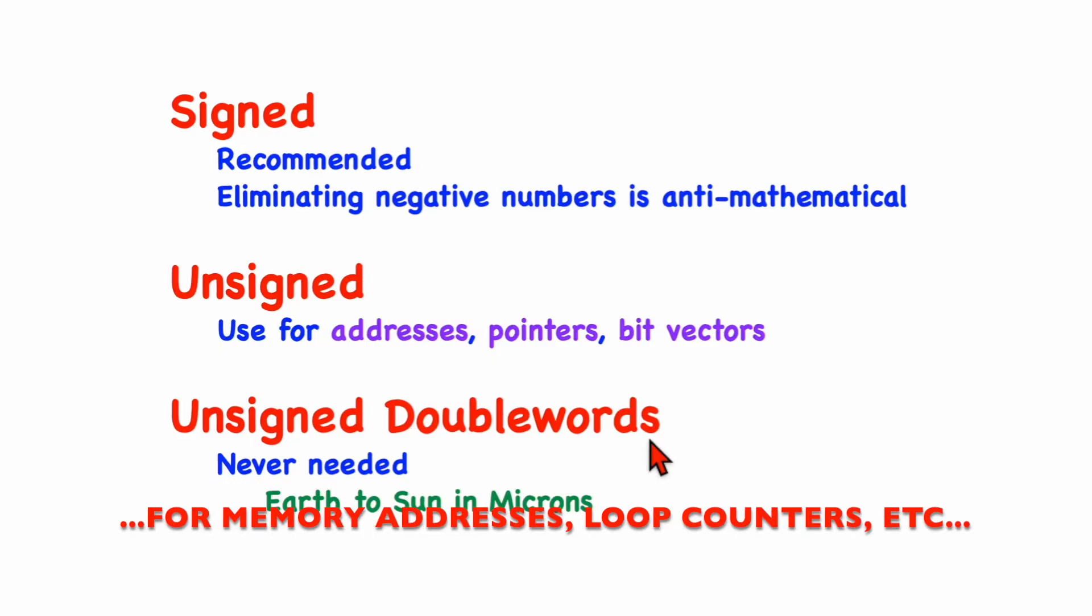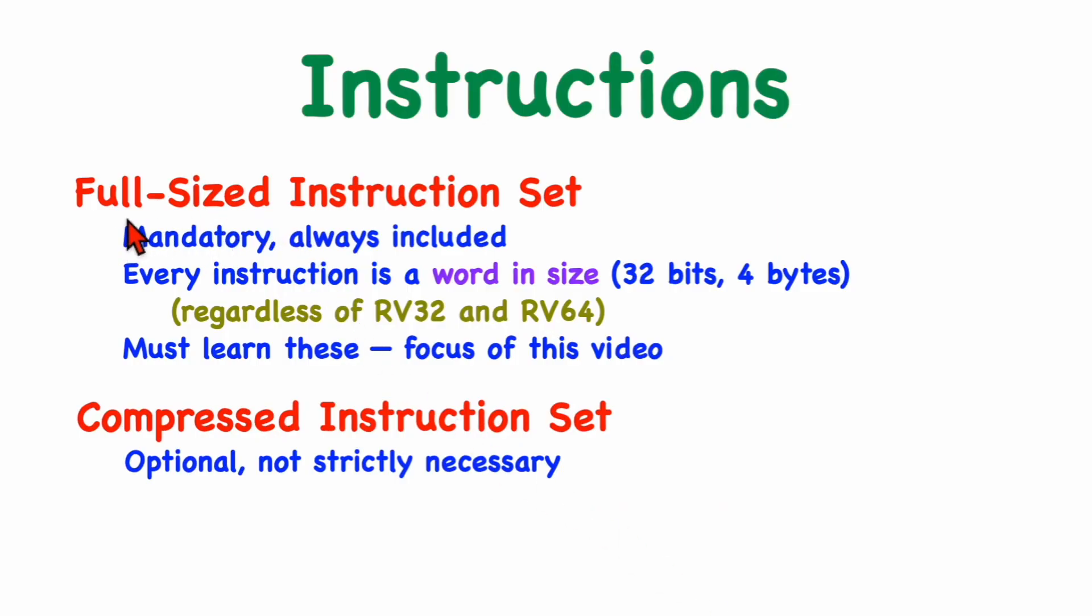RISC-V has two instruction sets, the full-sized and the compressed instruction sets. Full-sized instructions are mandatory and always included on any RISC-V core. Every full-sized instruction is a word or 32 bits in size, and that's regardless of whether we're looking at a 32-bit processor or a 64-bit processor. Maybe the registers are 64 bits in size, but the instructions are still 32 bits long. Every assembly language programmer must learn the full-sized instruction set, and that will be the focus of this video.